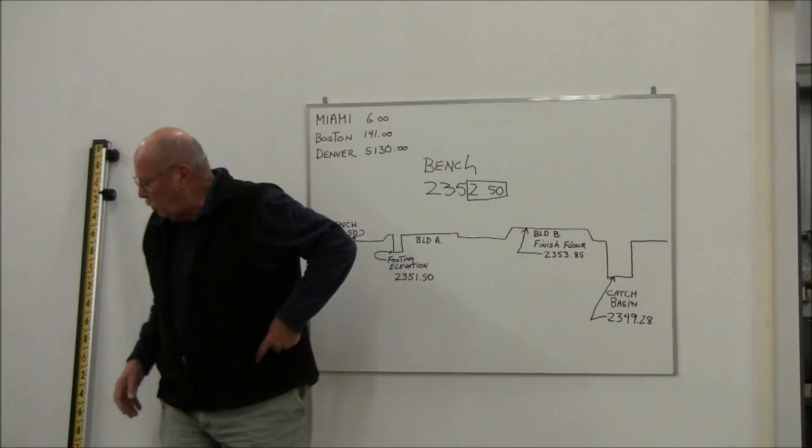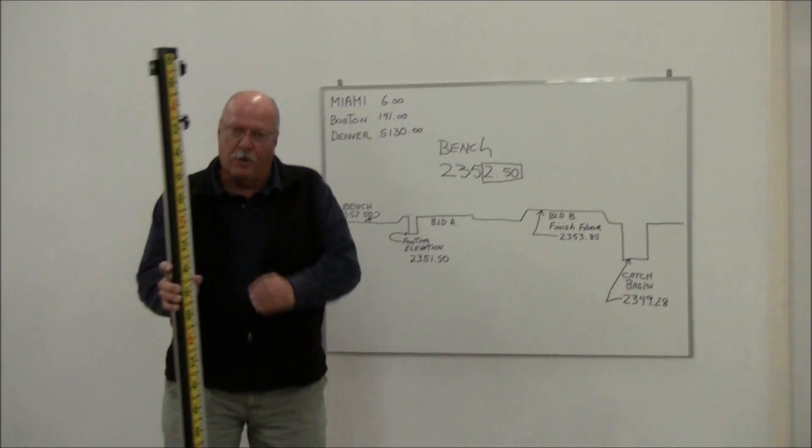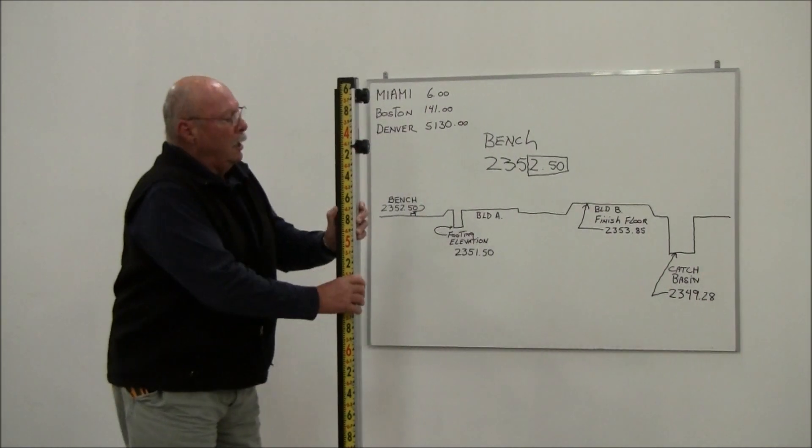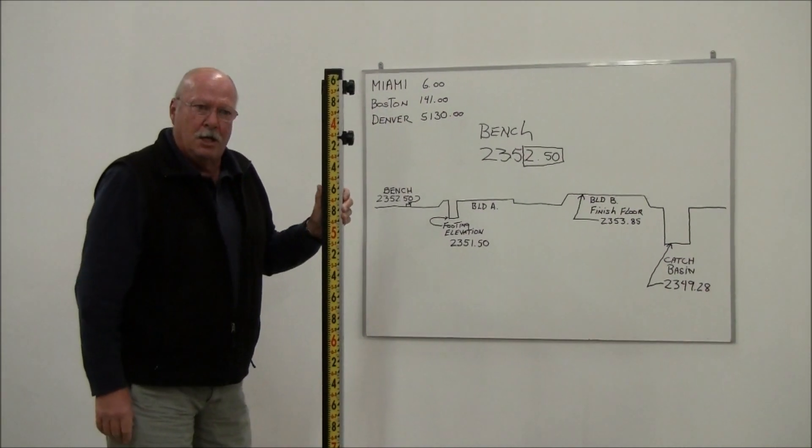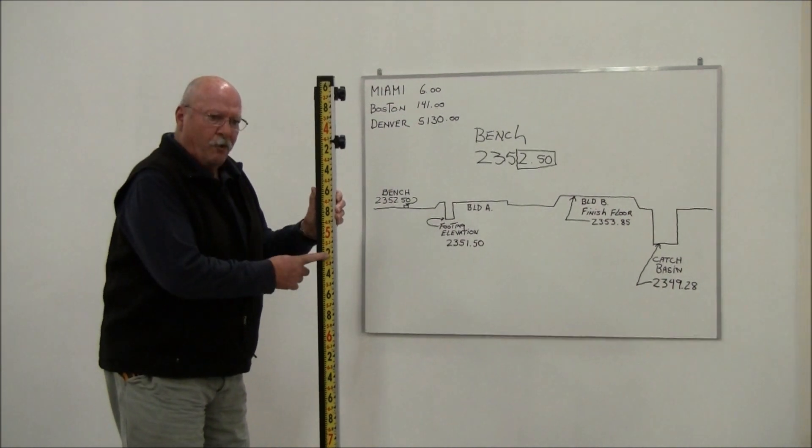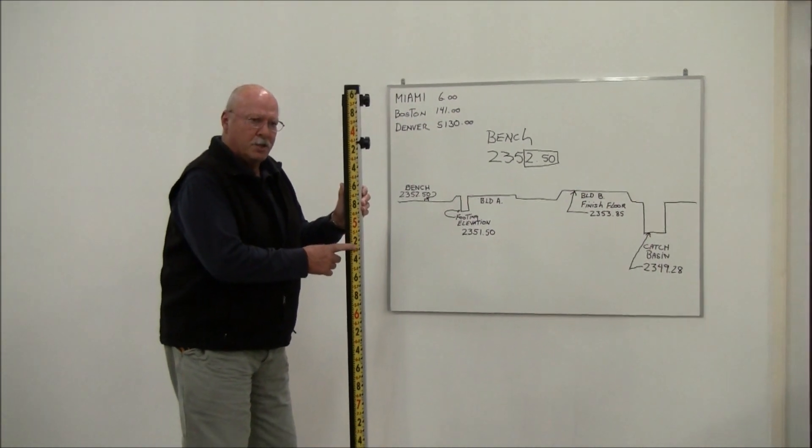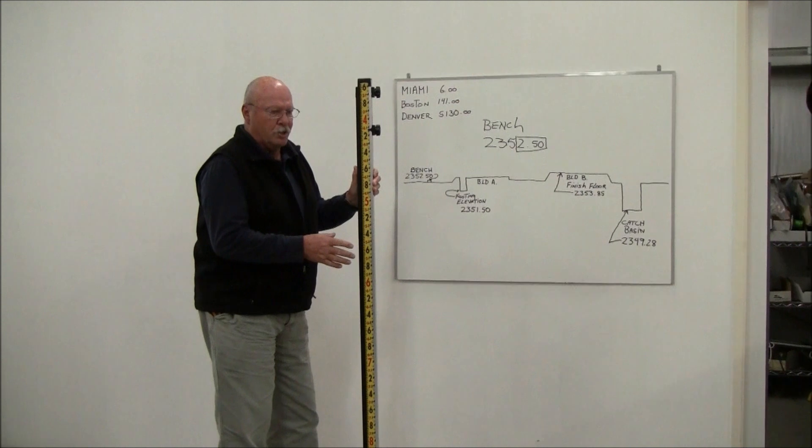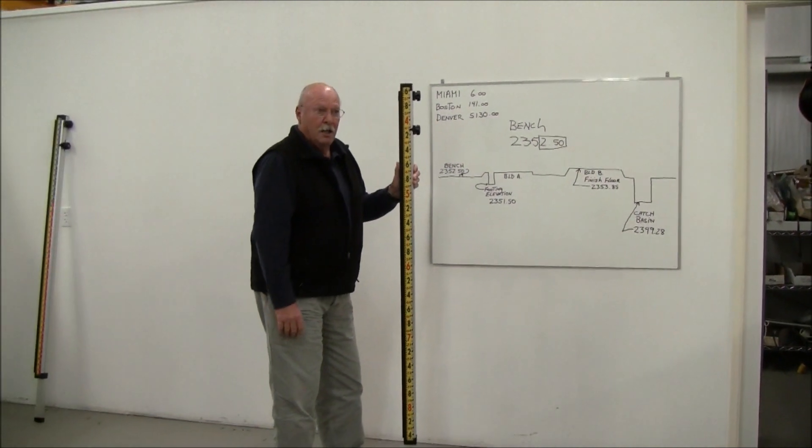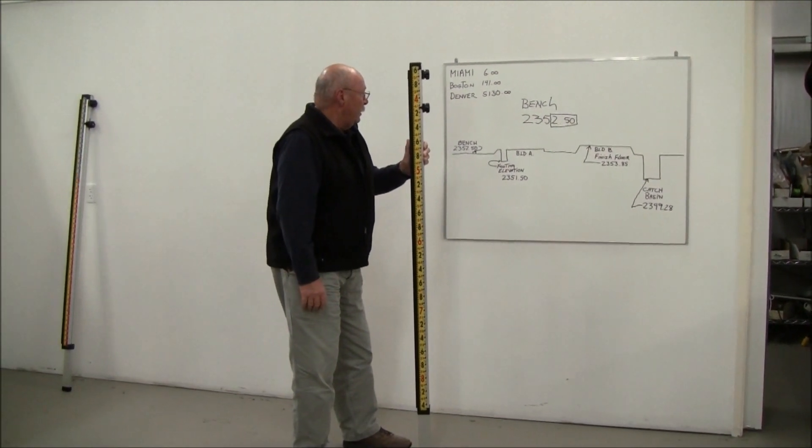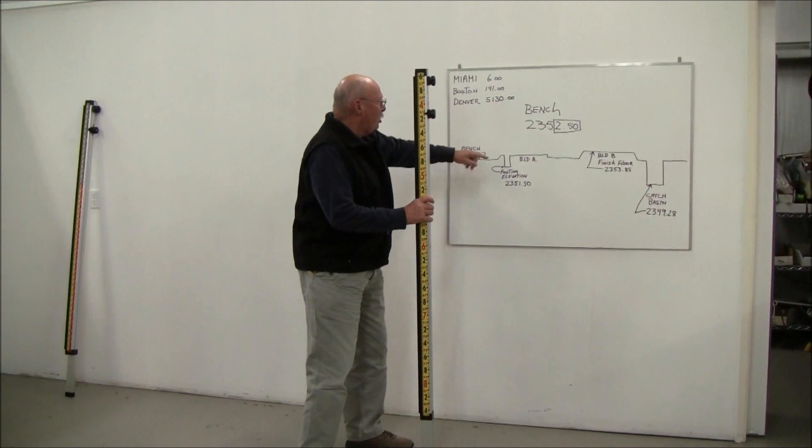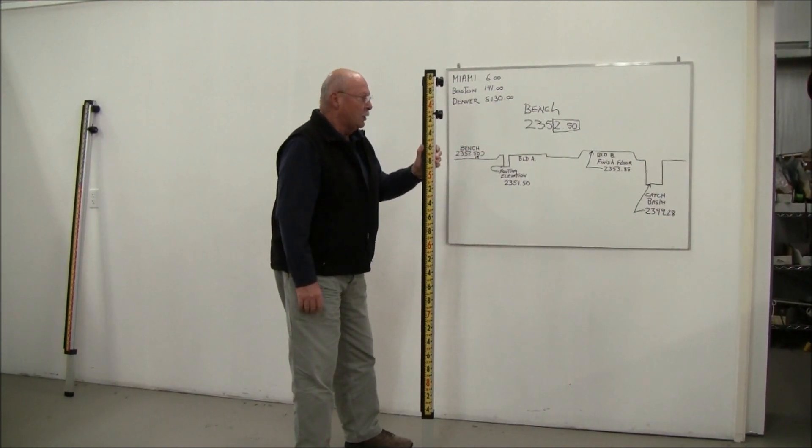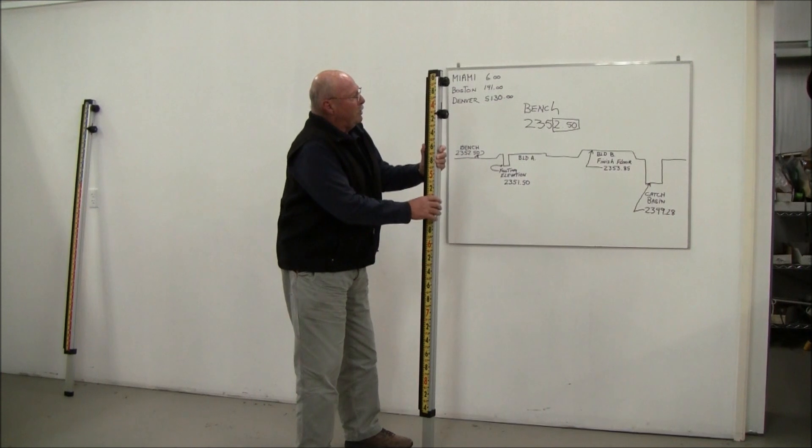This is a direct reading rod right here. We happen to make 16 different models. This is a 10-foot rod in feet, tenths, and hundredths. That's how many jobs are set up, probably most jobs. By the way, this true elevation is elevation above mean sea level.